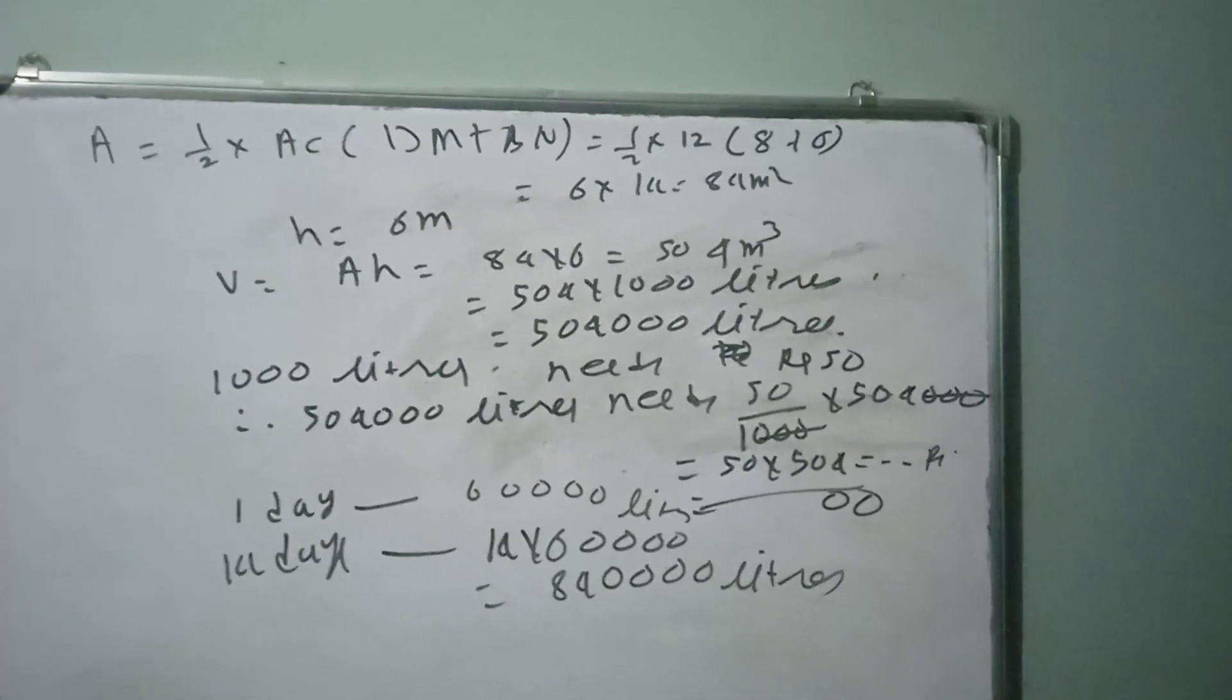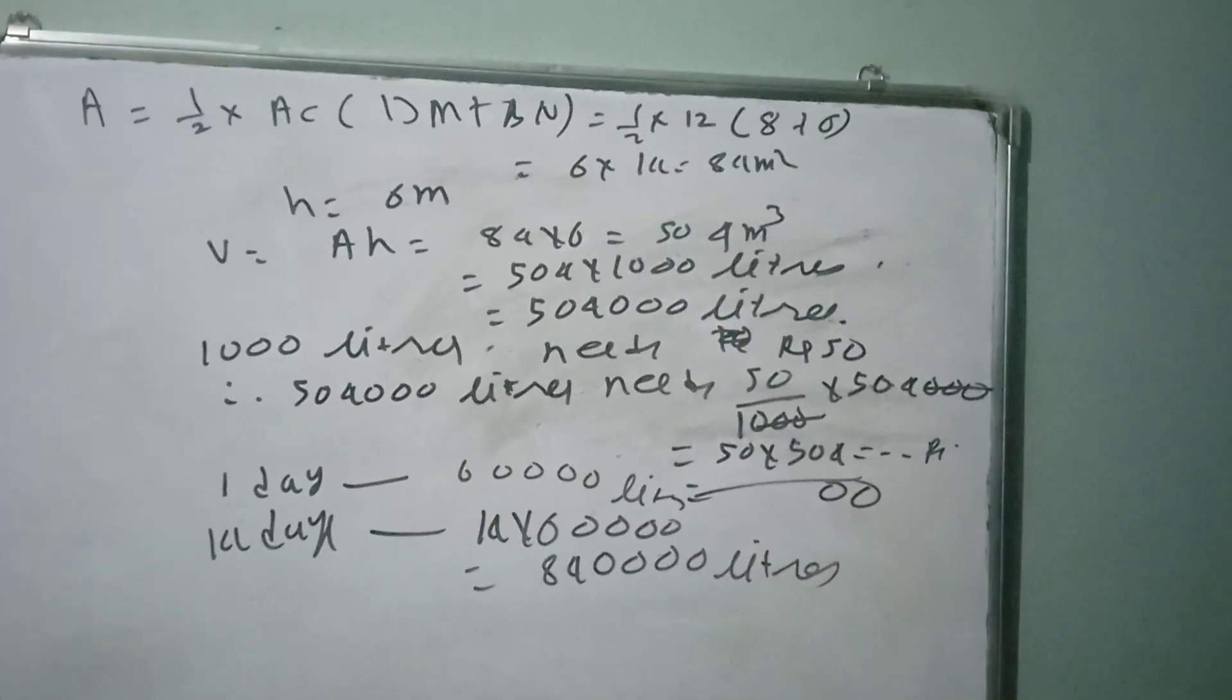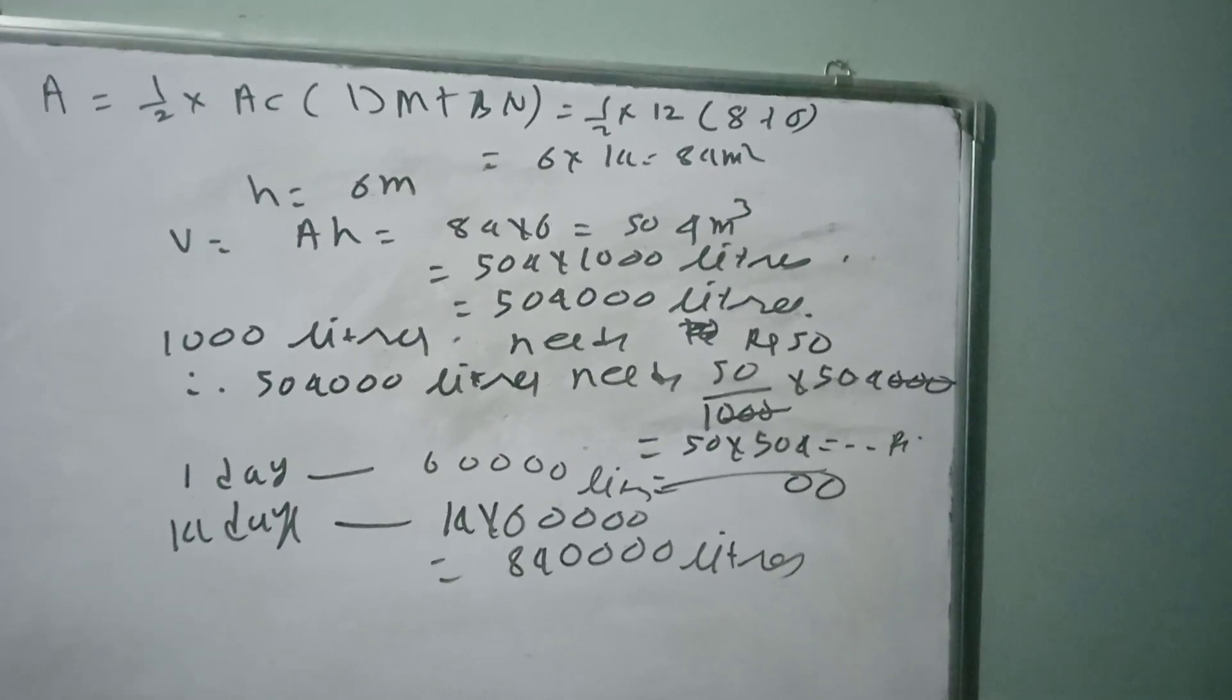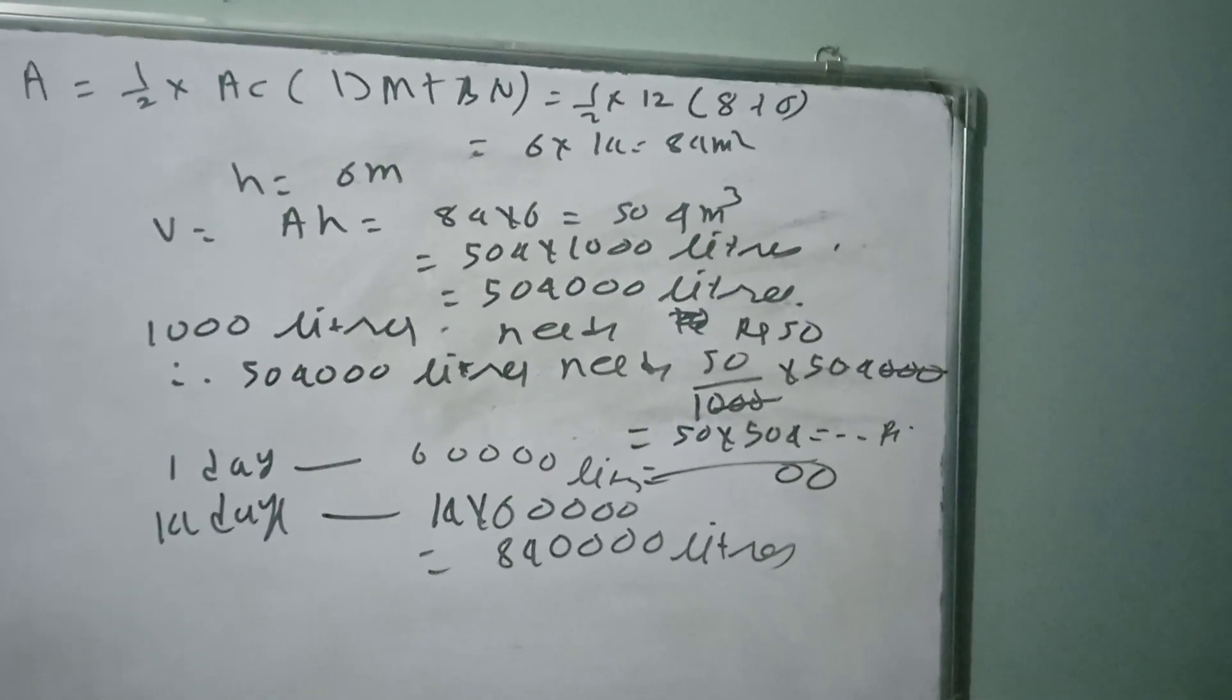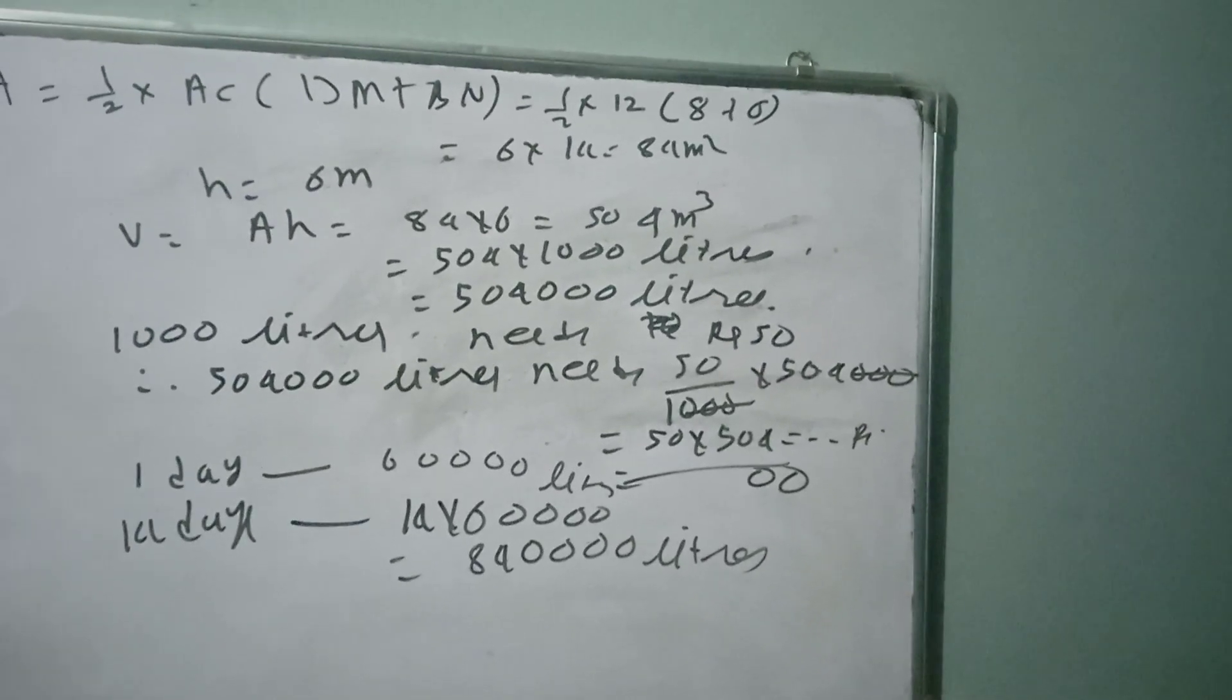Class 10 Mensuration. Area of the rectangle or field is half into diagonal into sum of the perpendiculars drawn on the diagonal from the opposite vertices.